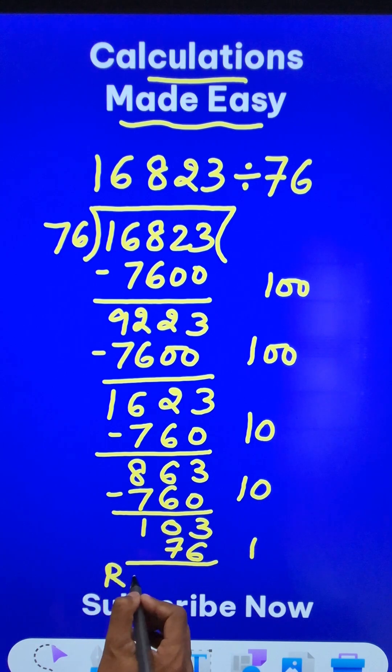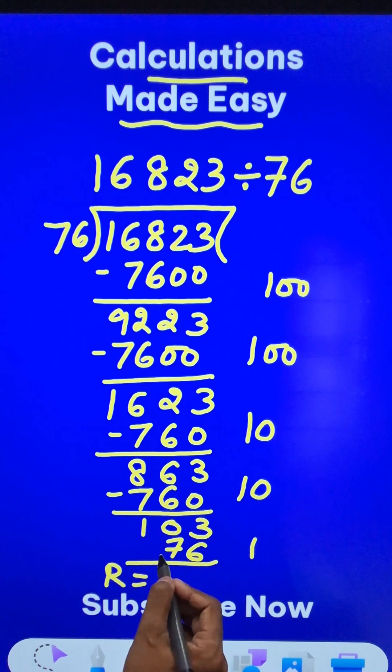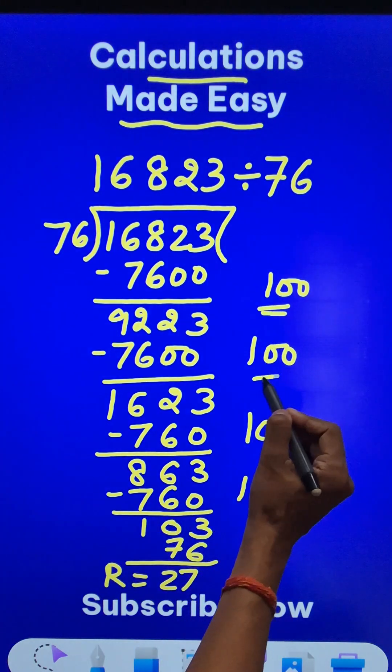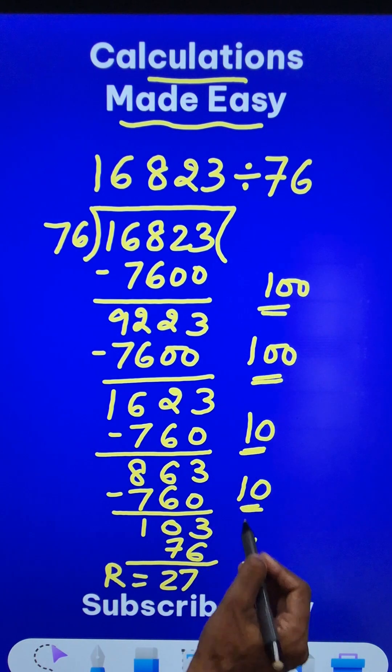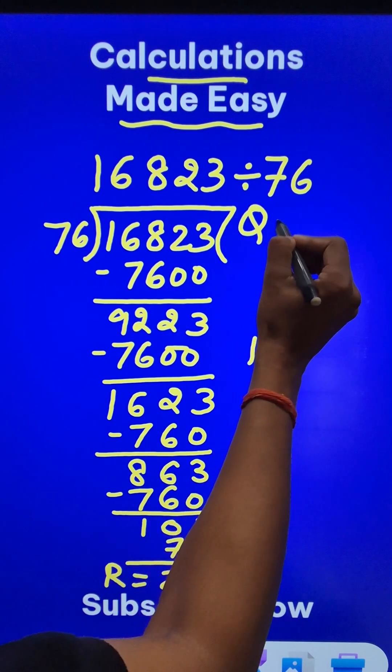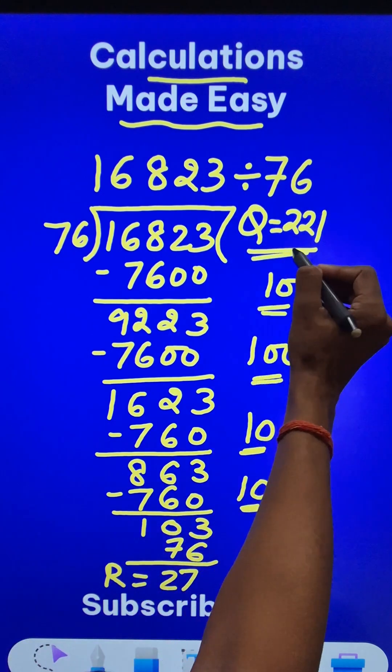So what is the remainder? The remainder will be just the difference between these two which is 27 and what is the quotient? 100 plus 100, 200 plus 21, 221. So the quotient for this question is 221 and the remainder 27.